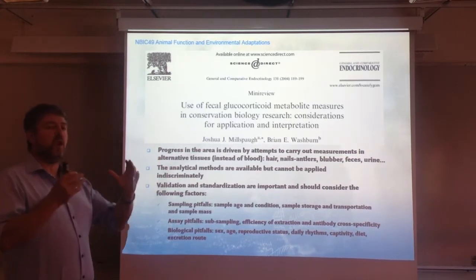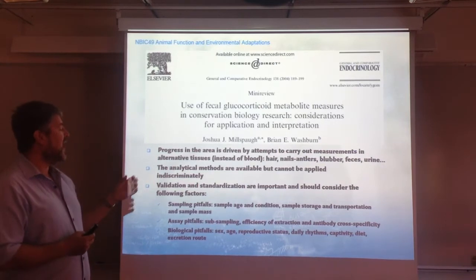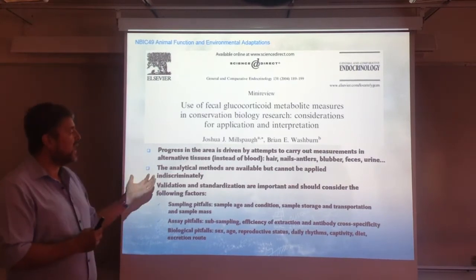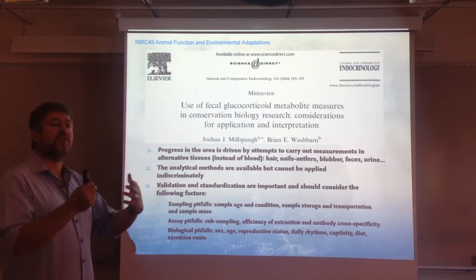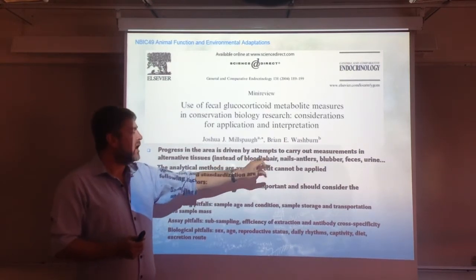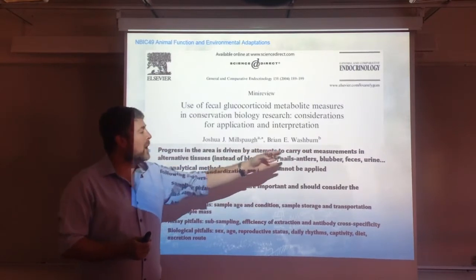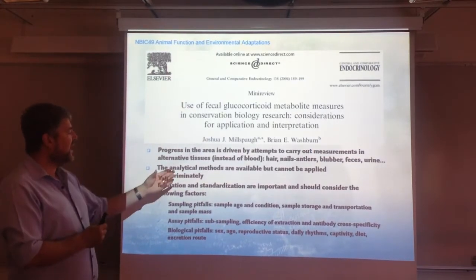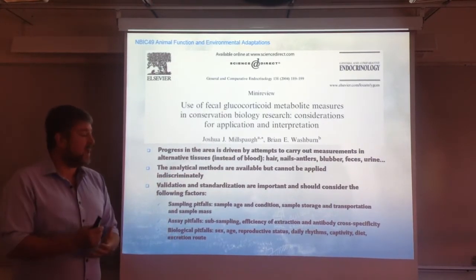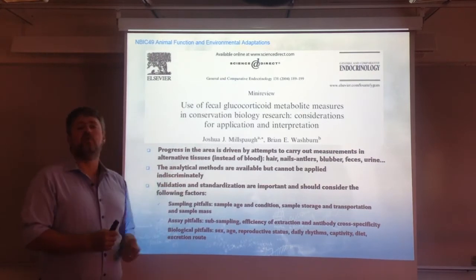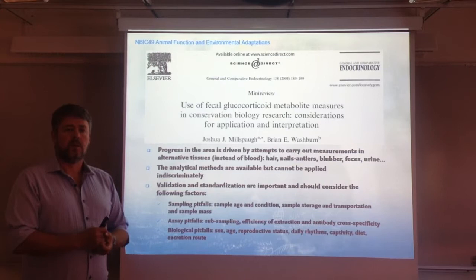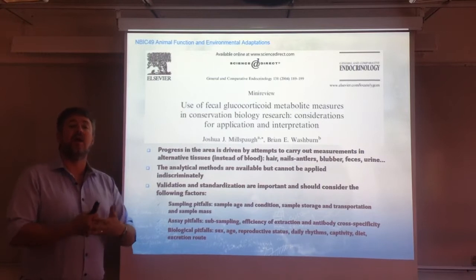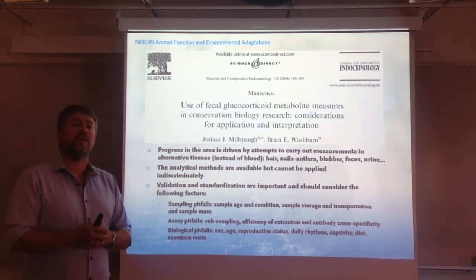Obviously in this area there has been a lot of progress, a lot of papers have been published. The idea is that instead of using blood — instead of taking a blood sample to measure glucocorticoids — we can use other types of samples: samples discarded by animals in the form of hair, nails or antlers, feathers, blubber, feces, or urine. The analytical methods are available and most are based on antibodies, but they should not be applied indiscriminately. There is a need to validate methods and techniques before they are used in new species or field conditions.